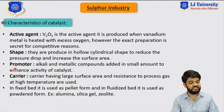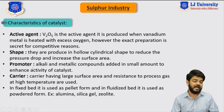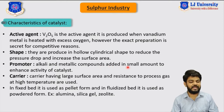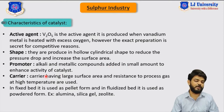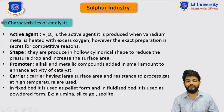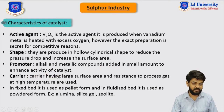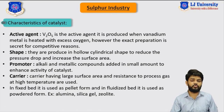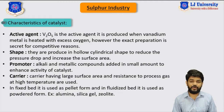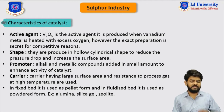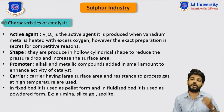The next characteristic of the catalyst is the promoter. In general, alkali and metallic compounds are added in small amounts to enhance the activity of the catalyst. These substances used to enhance the ability of the catalyst are known as promoters, and generally alkali and metallic compounds are used for this purpose.